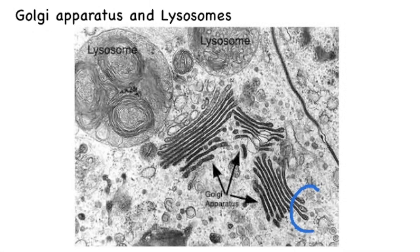Here we are able to identify the Golgi apparatus by its curved shape and by the vesicles, circled in blue, at the end of the tubules. We can also identify the lysosomes, circled in red, and relatively these are a little larger than the Golgi apparatus.